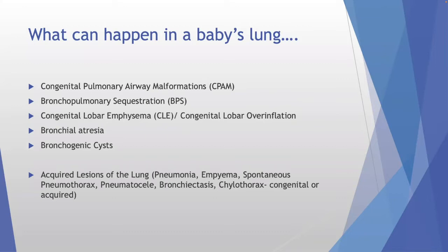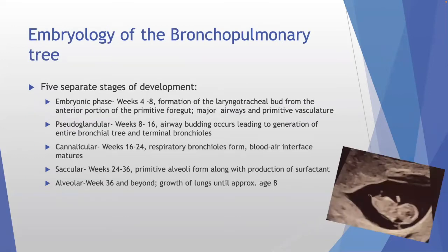What can happen in a baby's lung? Mostly we'll be talking about CPAMs — congenital pulmonary airway malformations. If you have old textbooks that say CCAMs, get rid of that terminology. We also cover bronchopulmonary sequestration, congenital lobar overinflation — we're moving away from 'emphysema' since it's not emphysema — bronchial atresia, bronchogenic cysts, and acquired conditions like chylothorax. Fetal lung malformations occur in up to 1 in 2,000 live births.